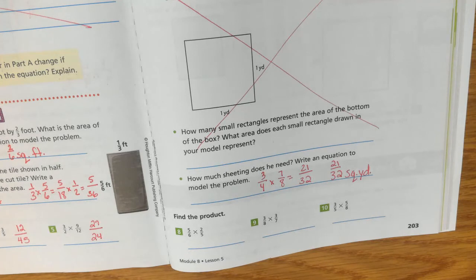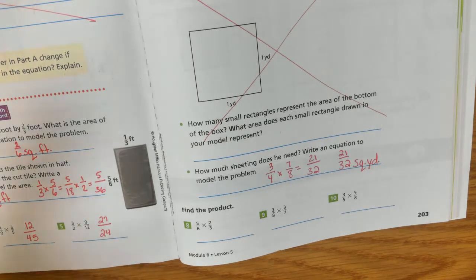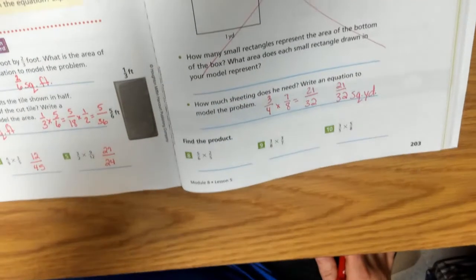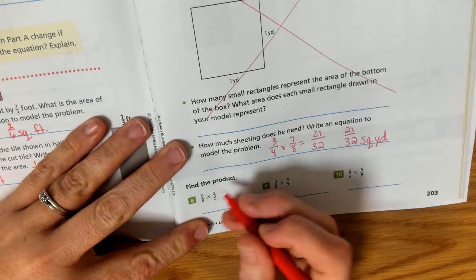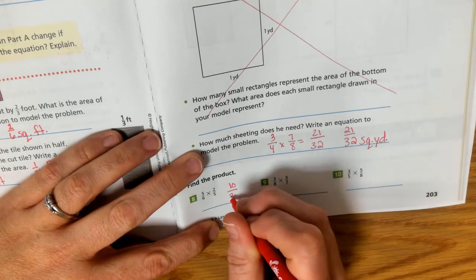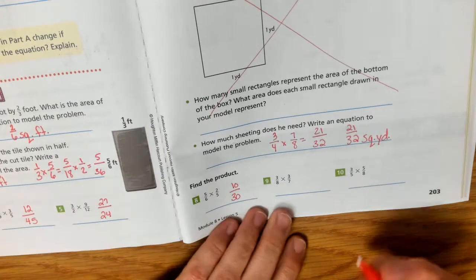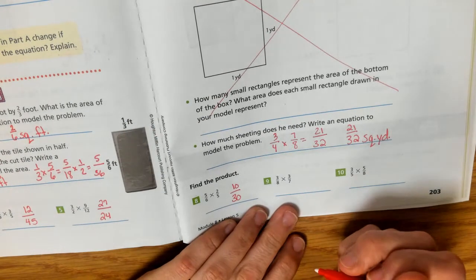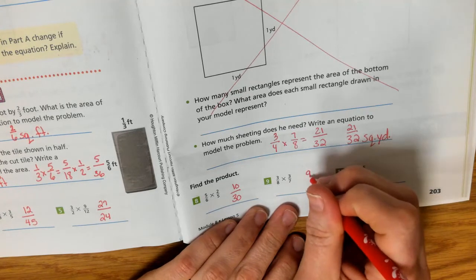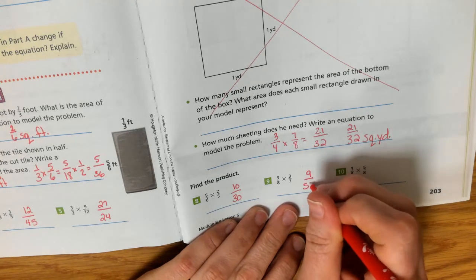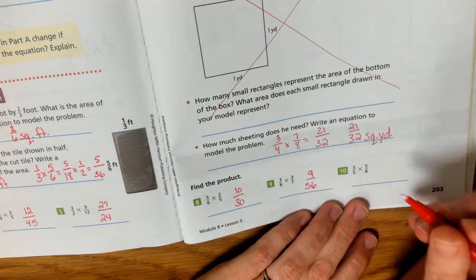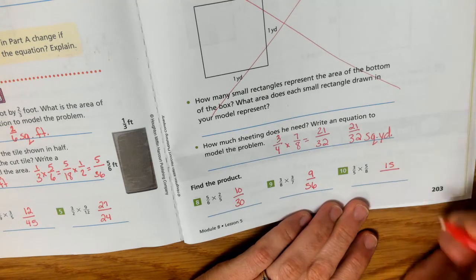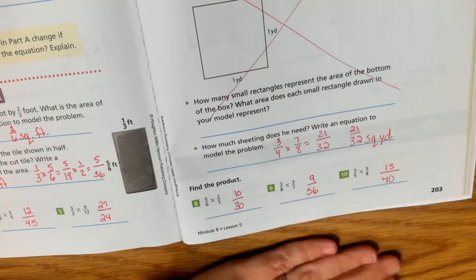I don't want to make it harder than it is or add extra. I mean, if you can multiply, then you're good to go. So, 5 sixths times 2 fifths. 5 times 2 is 10. 6 times 5 is 30. So 10 30ths. 3 eighths times 3 sevenths. 3 times 3 is 9. 8 times 7 is 56. 9 56ths. 3 fifths times 5 eighths. 3 times 5 is 15. 5 times 8 is 40. 15 40ths.